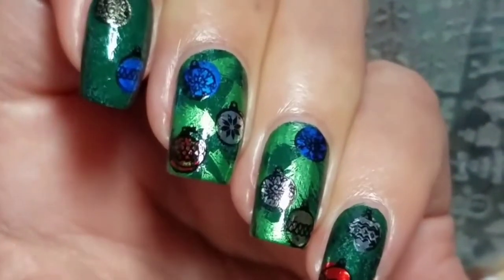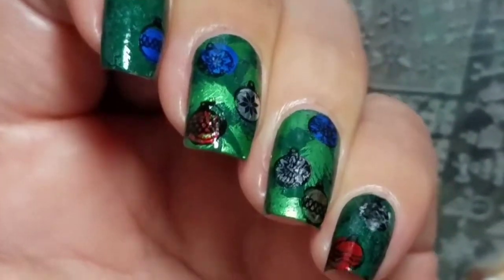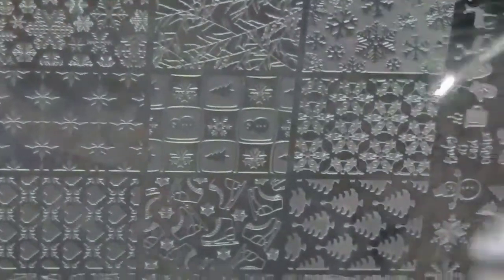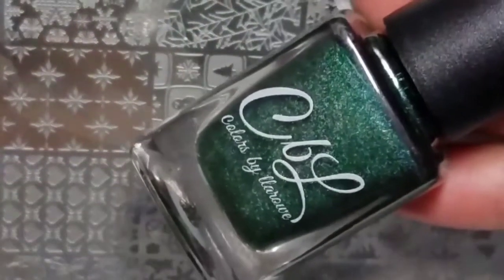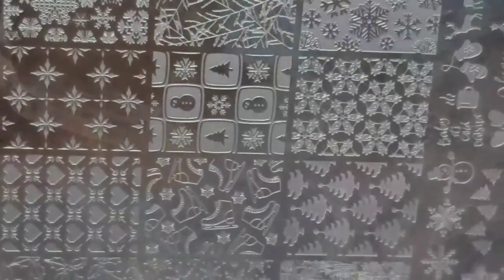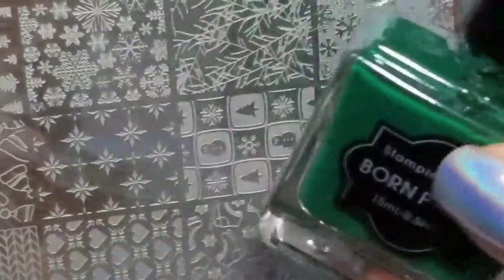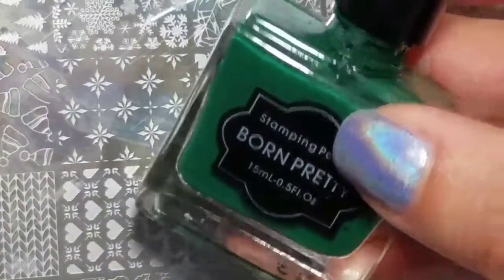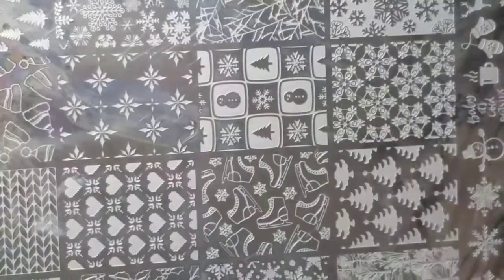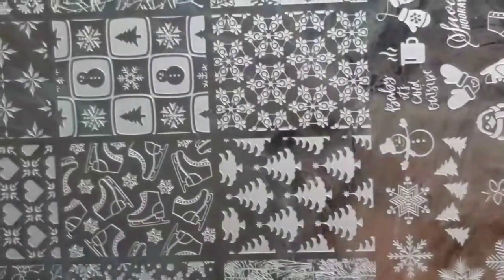Alright, first I apologize that I sound like a frog, but I've been sick but I wanted to get this filmed today. So what I'm doing is starting with a coat of Colors by Leroux Pine Bows, which is this really pretty dark green holo. Then I'm going to double stamp twice with this dark Born Pretty stamping polish and this metallic green Born Pretty stamping polish.